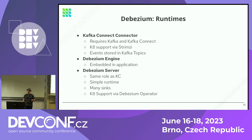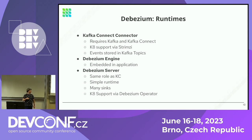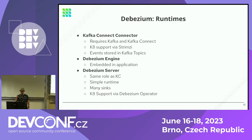Debezium Server pretty much fulfills the same role as Kafka Connect does, but it's a simpler, more lightweight runtime meant for different data-stream architectures where you either don't want to or can't use Apache Kafka. We also support many other things besides storing events in Kafka — you can get them into Amazon Kinesis, Google Pub/Sub, or simply send them over HTTP. A new addition to this ecosystem is the Debezium Operator, just released in first preview, which you can use to easily deploy Debezium Server on top of Kubernetes as well.